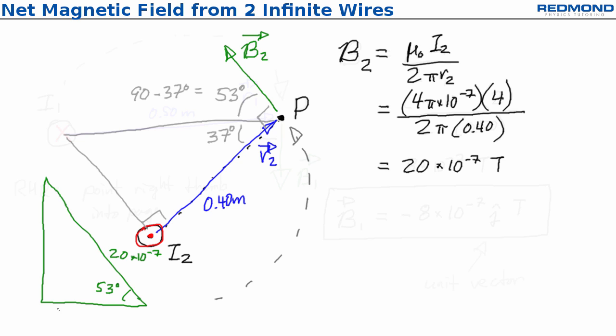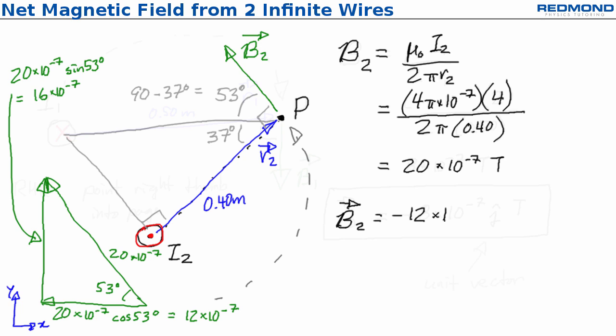B2x has a magnitude of 20 times 10 to the negative 7 cos 53, which works out to 12 times 10 to the negative 7, and B2y has a magnitude of 20 times 10 to the negative 7 sin 53, which is 16 times 10 to the negative 7. Since the x component is negative and the y component is positive, I can write B2 in vector form as negative 12 times 10 to the negative 7 i-hat plus 16 times 10 to the negative 7 j-hat tesla.